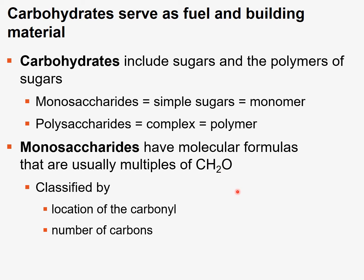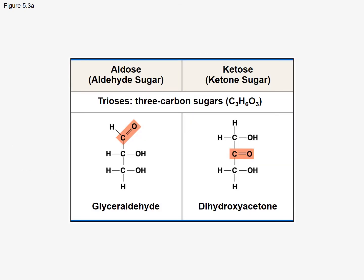Monosaccharides are classified by the location of the carbonyl — remember the carbonyl group, there are two types: the aldehyde and the ketone — and the number of carbons they possess. Here are a couple of examples of trioses. Triose is the general term used to describe three-carbon sugars.